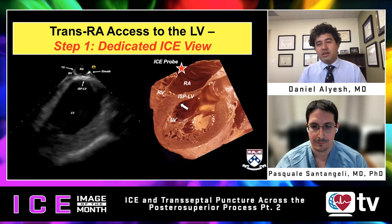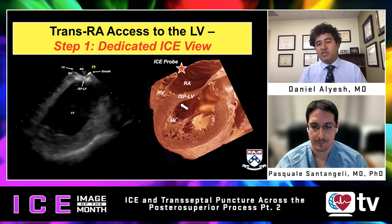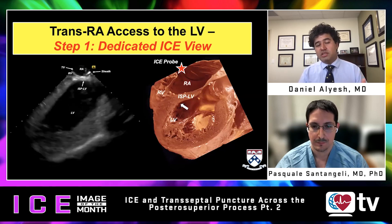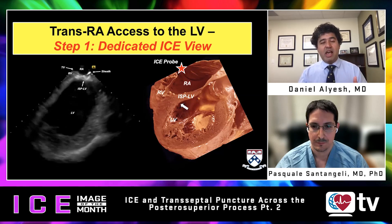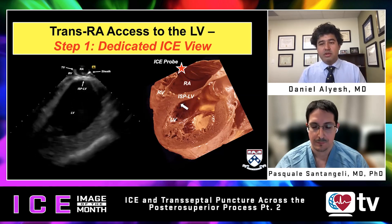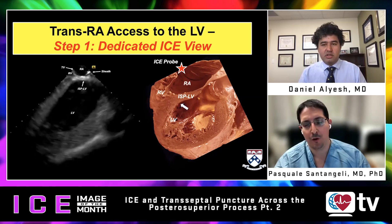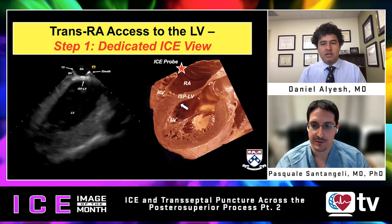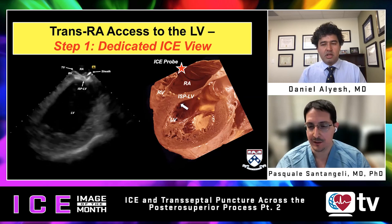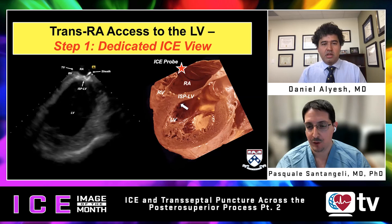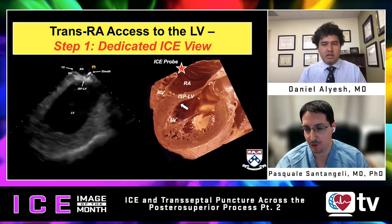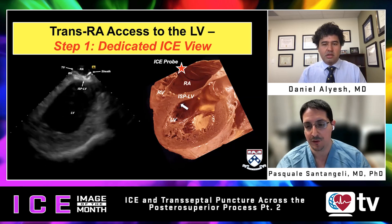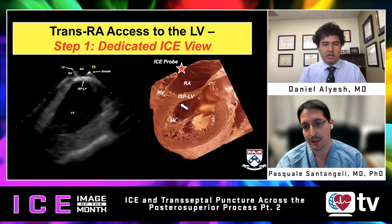Our first question: this is the dedicated ICE view with the sheath. Can you describe what viewers are seeing relative to the McAlpine image, and how you get all the catheters in place and obtain this view? The prior episode showed a view with the non-coronary cusp, obtained by advancing the catheter in the mid-right atrium, clocking it with the coronary sinus in the first field, and countering slightly — giving you the inferior septal or posterior superior process of the left ventricle.